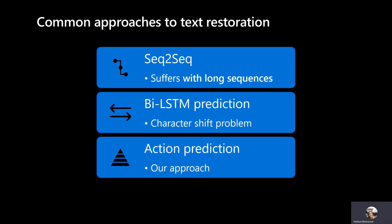Let's discuss related work and common approaches to text restoration. Sequence-to-sequence models are a very natural first approach. They convert an input text into an output text and can process text at the character level. The LSTM is a very common paradigm for such sequence-to-sequence models — usually one LSTM will encode input text and another LSTM will produce output text. The issue we found with seq-to-seq models is that with long sequence lengths, they tend to produce more errors than they correct. Another approach to text restoration is the use of an encoder-decoder model with a bi-LSTM. In the case of a bi-LSTM, decoding is done after both the forward and backward LSTMs encode the input sequence. The decoding happens at every character step, so the output text characters are aligned one-to-one with the input text characters. This produces a character shift problem that we will discuss on the next slide.